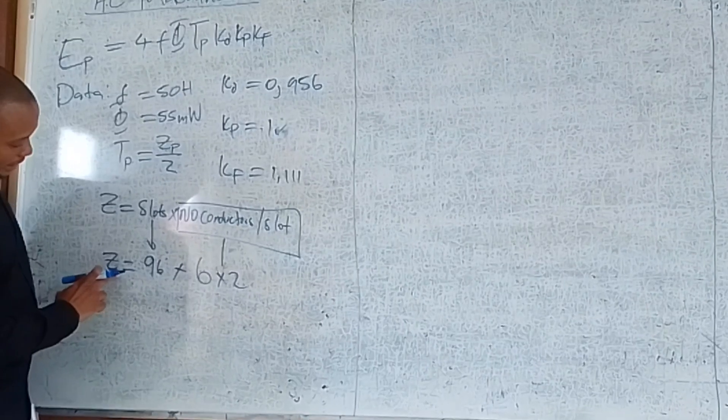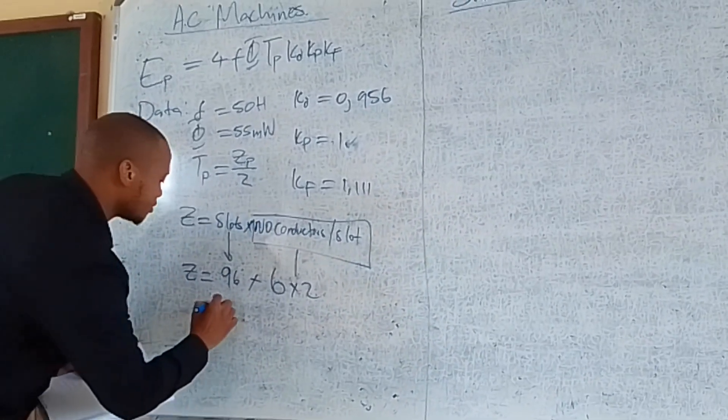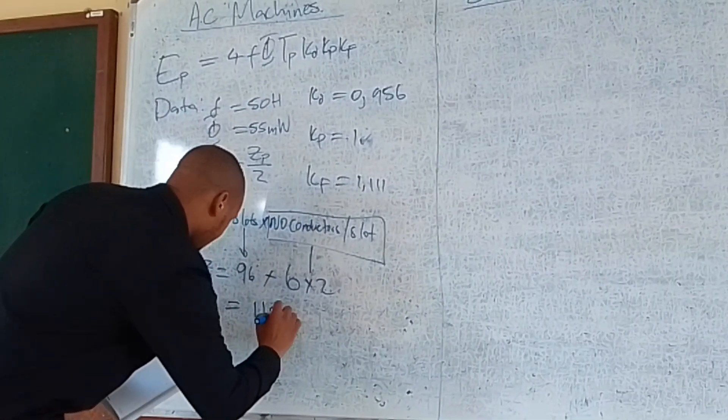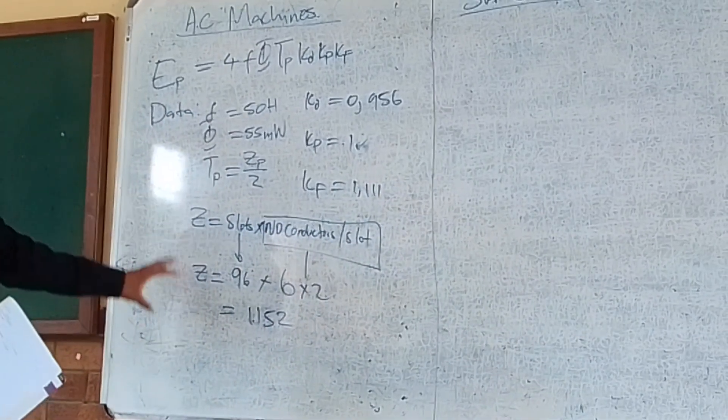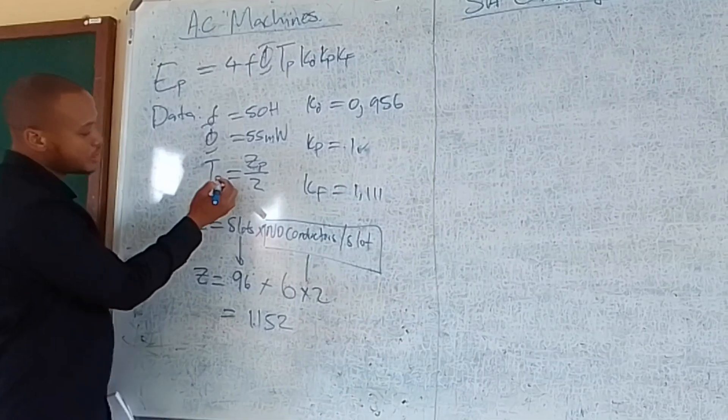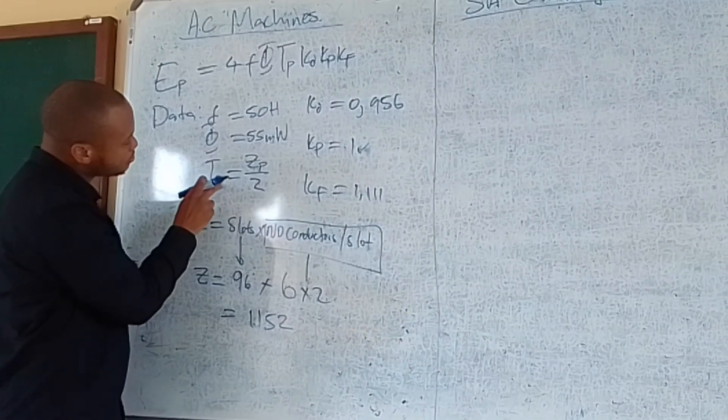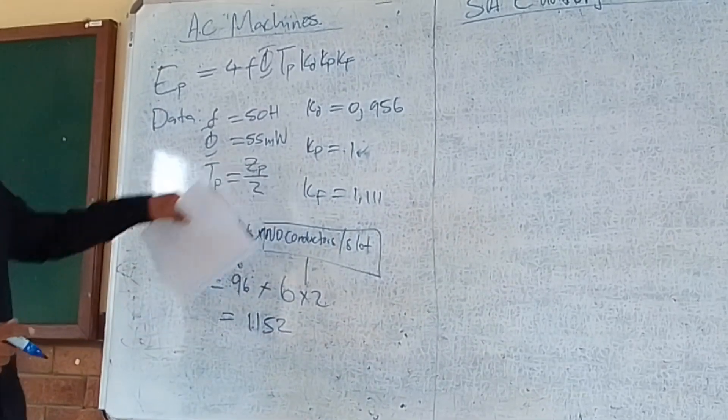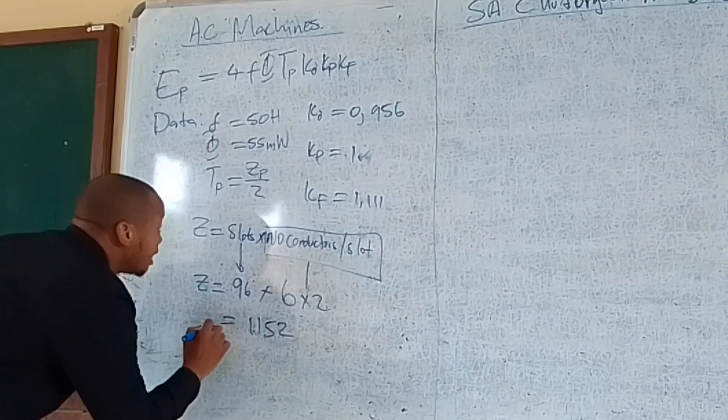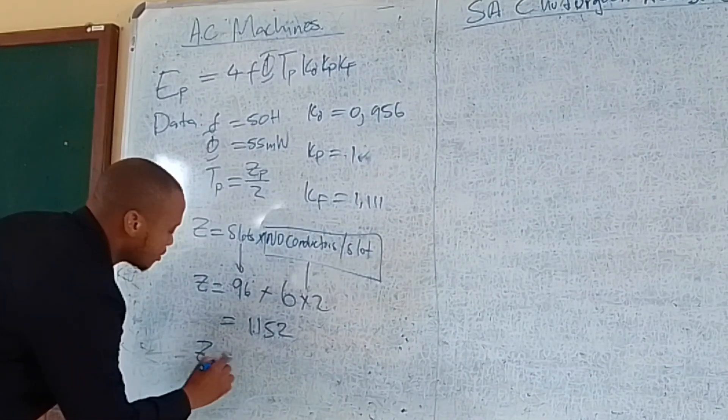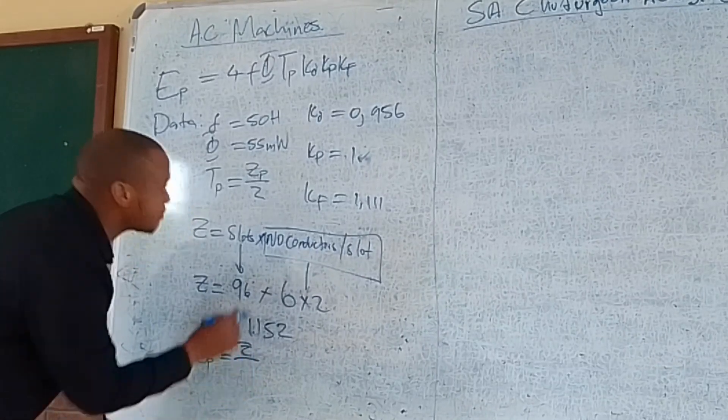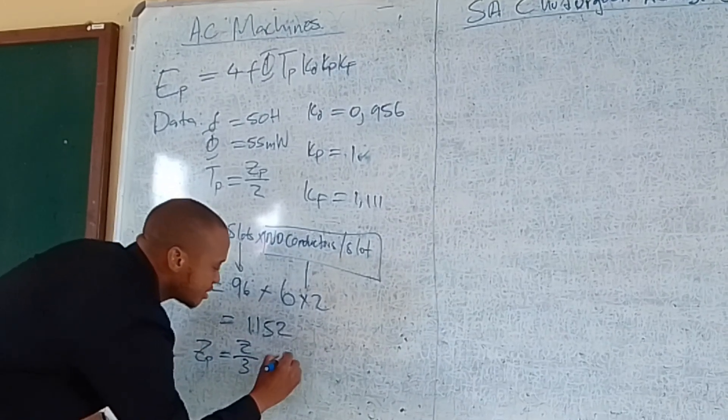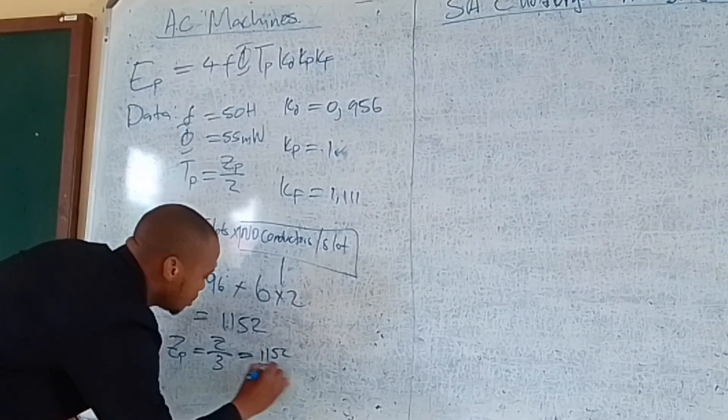If you calculate, you get that Z equals 1152. The total number of conductors in the machine is 1152. The turns per phase equals Zp divided by 2. To get the value of Zp, Zp equals the total conductors divided by the number of phases. This is a three-phase machine, so 1152 divided by 3.